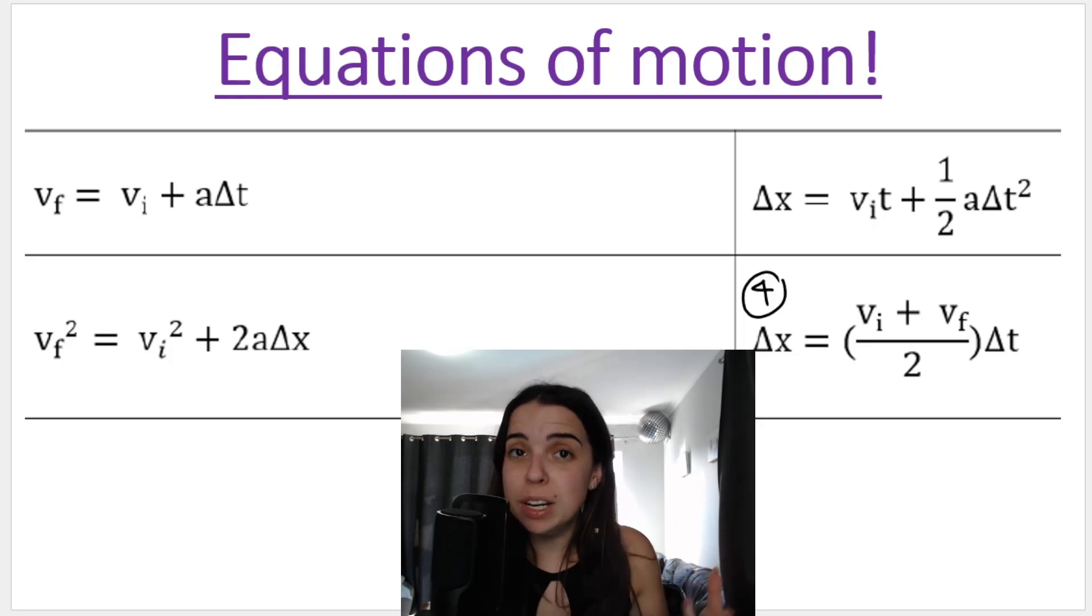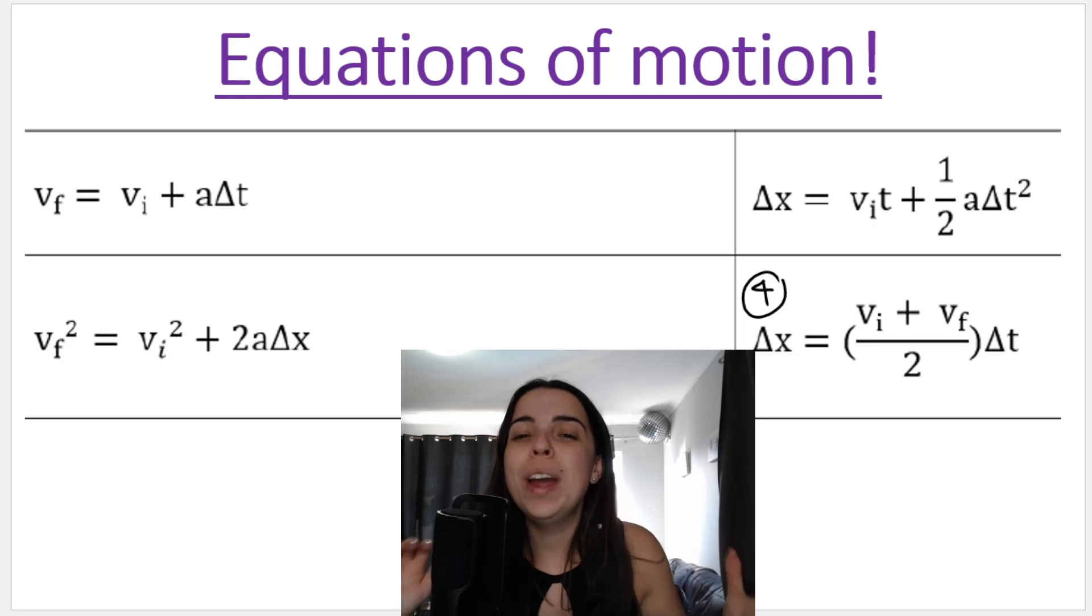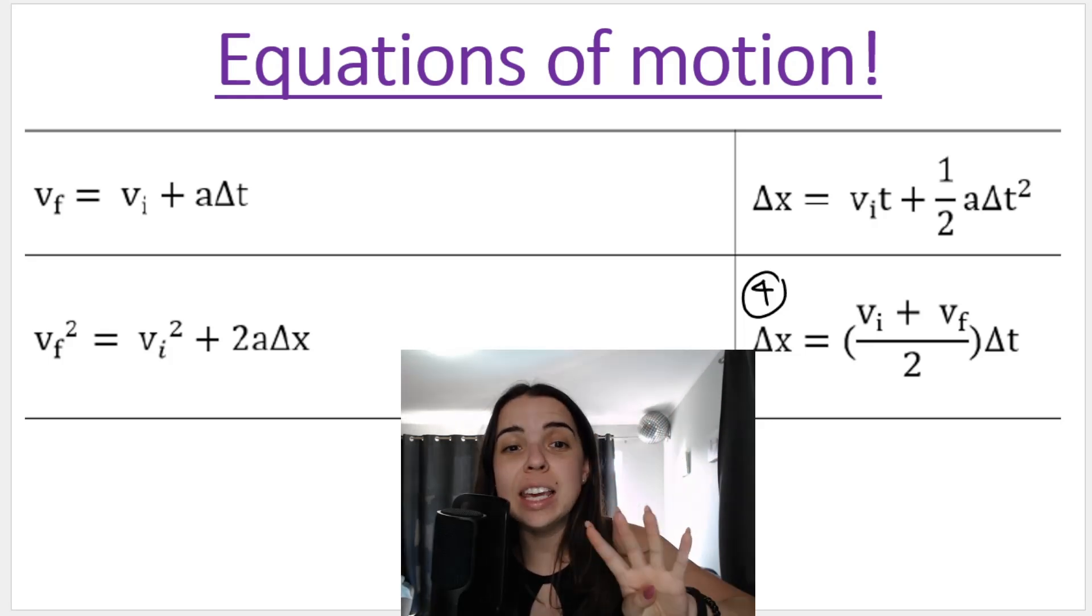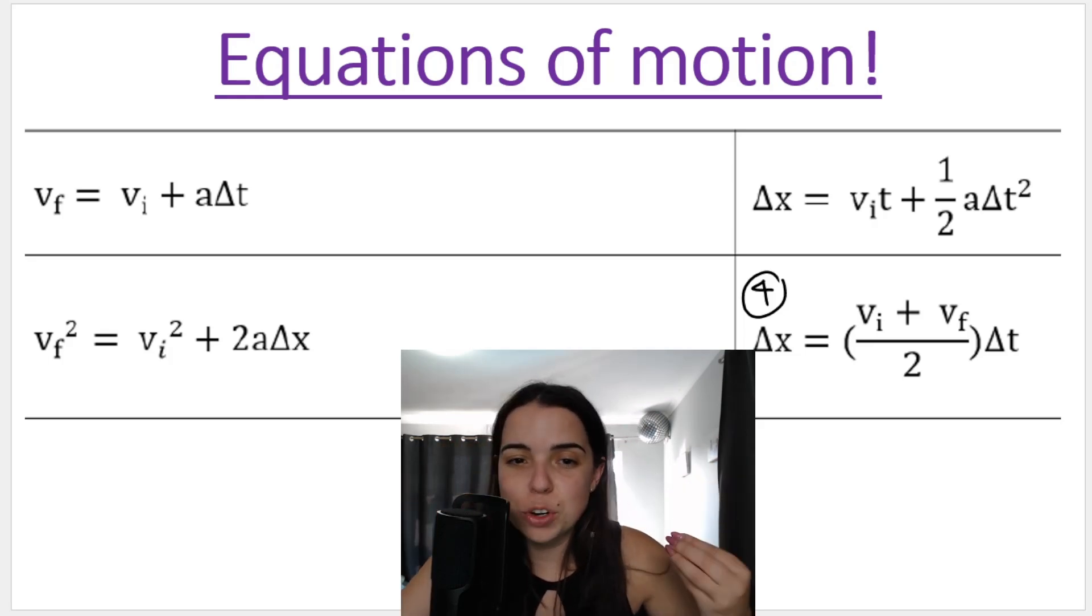Equations of motion are a set of formulas in physical sciences that describes how an object moves when they have a constant acceleration. And they connect four key quantities, and we will discuss that in a second. We use these equations of motion to figure out how far an object goes, how long it takes, the speed, or the acceleration with which it is traveling.